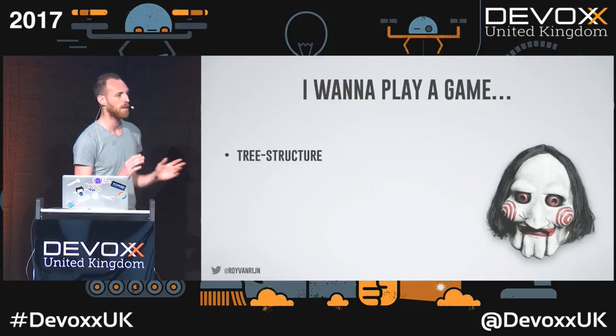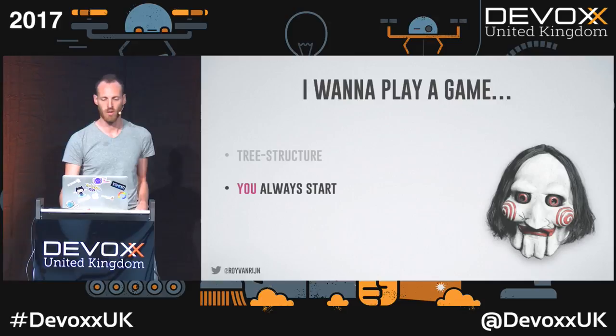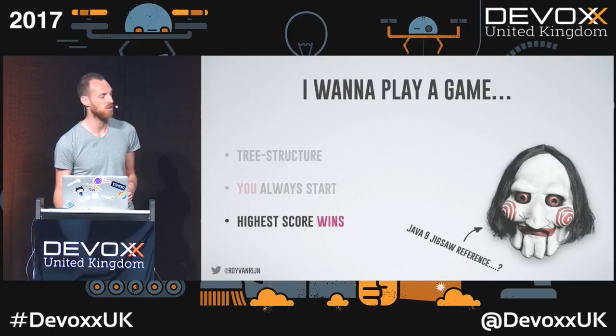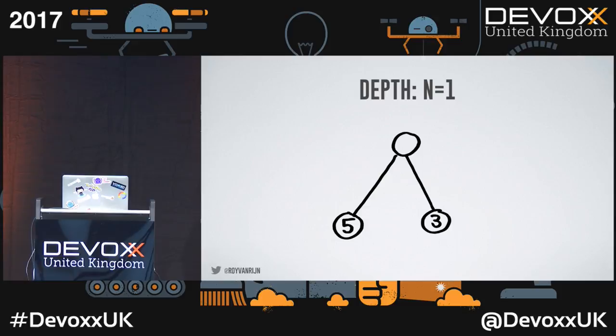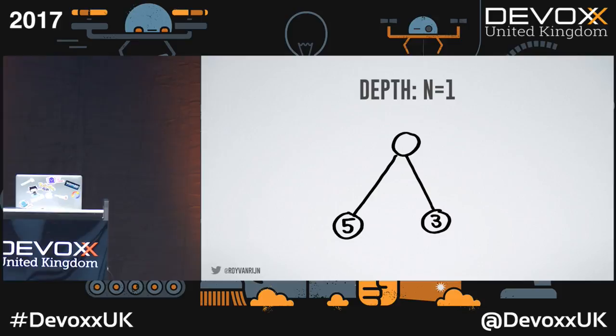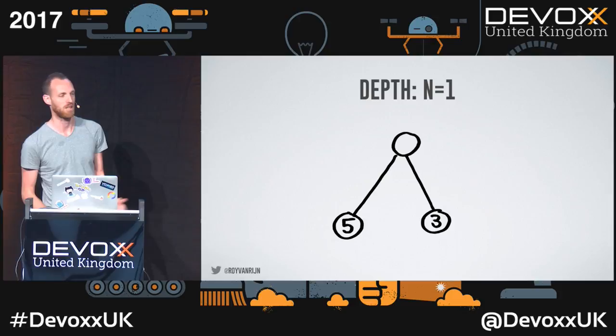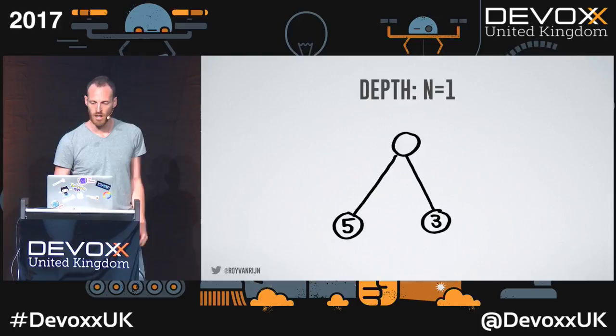I want to play a game. The game has a tree-like structure. You're lucky because you can always start, and your aim is to get the highest score. So this is our game. You start at the top, you can go either left or right, and your goal is to get the highest score. This is pretty trivial — we pick five because that's higher than three, so we go to the left.